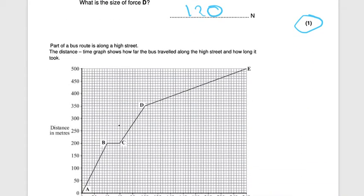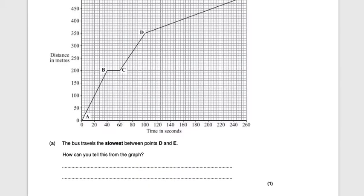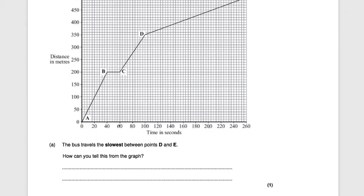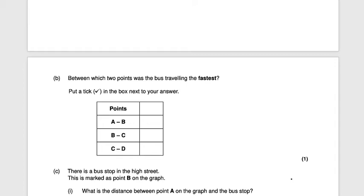Returning to the bus route question: the bus travels slowest between points D and E, as that section has the lowest gradient. The question asks how you can tell this from the graph — the answer is that D to E has the lowest gradient, or slope. That's one mark.